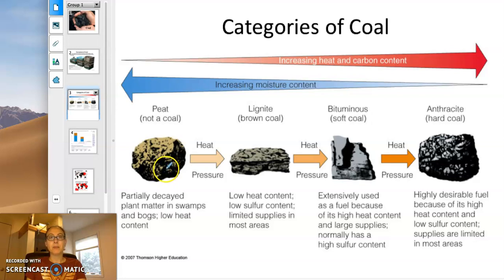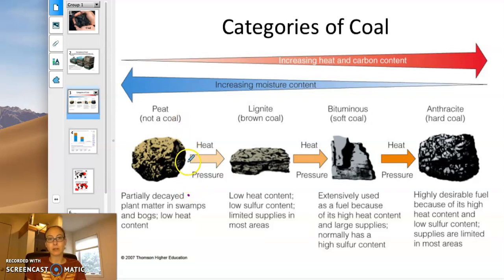Peat is basically not decomposed — only slightly partially decayed. Because there's no oxygen, it's not really being decomposed, but there isn't as much heat or pressure squeezing out the moisture. So when you burn peat, it's much less efficient than even burning wood because of the high moisture content.